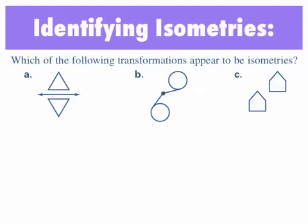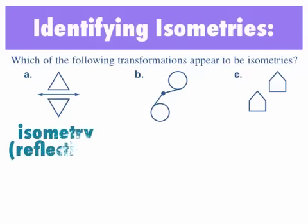Identifying isometries: which of the following transformations appear to be isometries? And I'm actually going to go ahead and name the transformations also. A, if you notice, we have the horizontal line, we have two triangles, and they are congruent, or they appear to be congruent, so it would be an isometry. And this type of transformation would be a reflection.